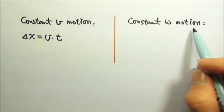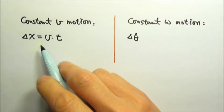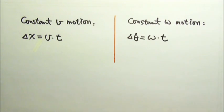For constant angular velocity motion, it will be delta theta equals the angular velocity times time.